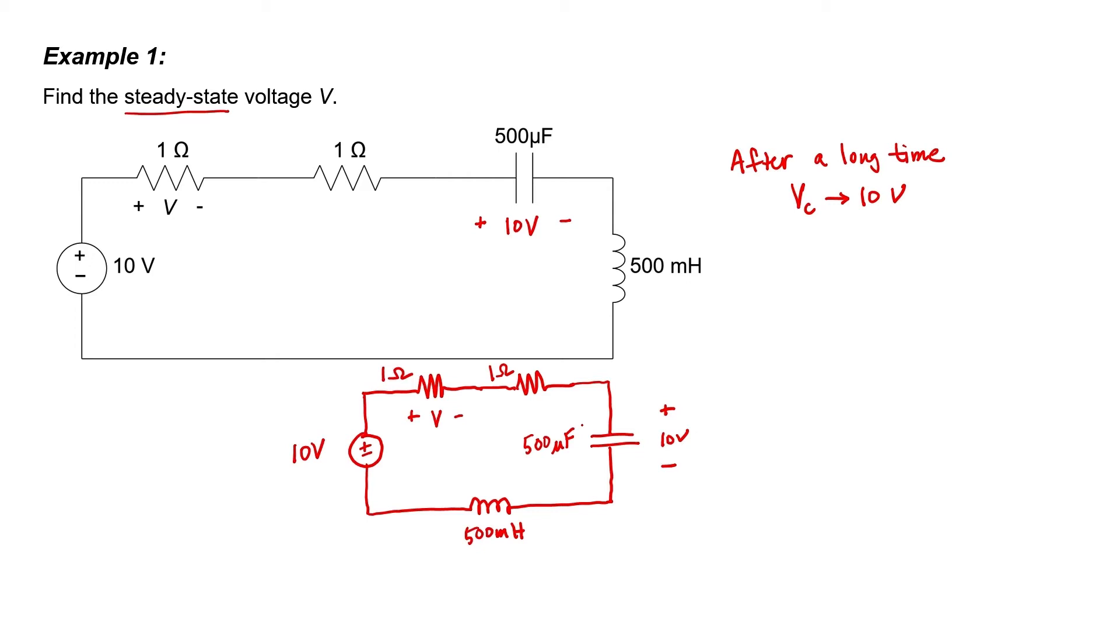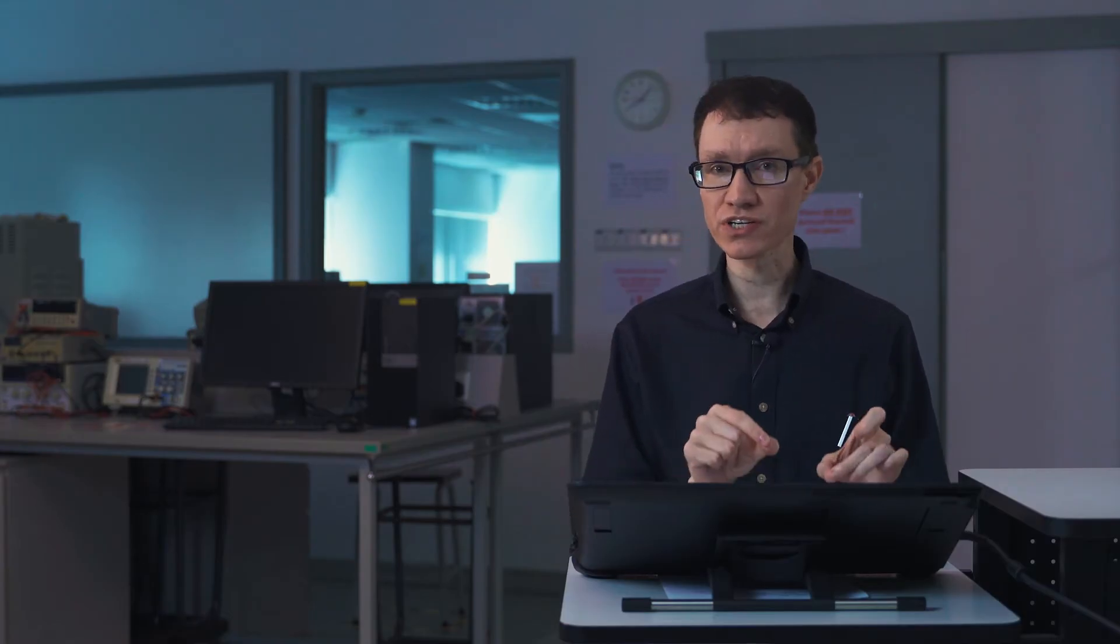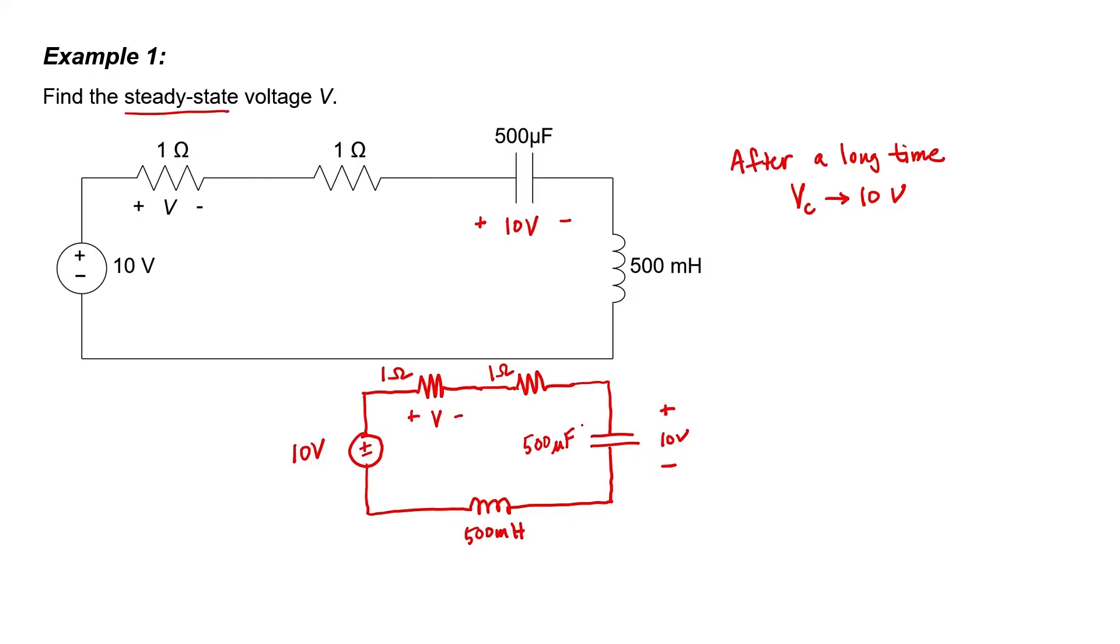The amount of time it takes for that capacitor to reach 10 volts, of course, depends on the value of the other components in the circuit. If you use larger resistors, it takes longer for the capacitor to charge. If you use a larger inductor, it takes longer for the current to get flowing through that inductor in order to get the capacitor charged up. But if you wait long enough, then eventually that capacitor is going to be charged to 10 volts. And when that happens, the current flowing through the two resistors is going to be zero, and the current flowing through that inductor is also going to be zero.